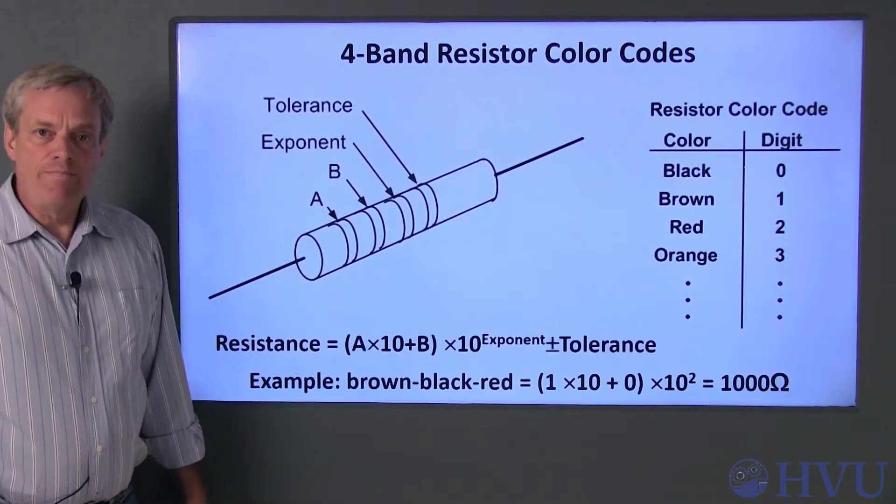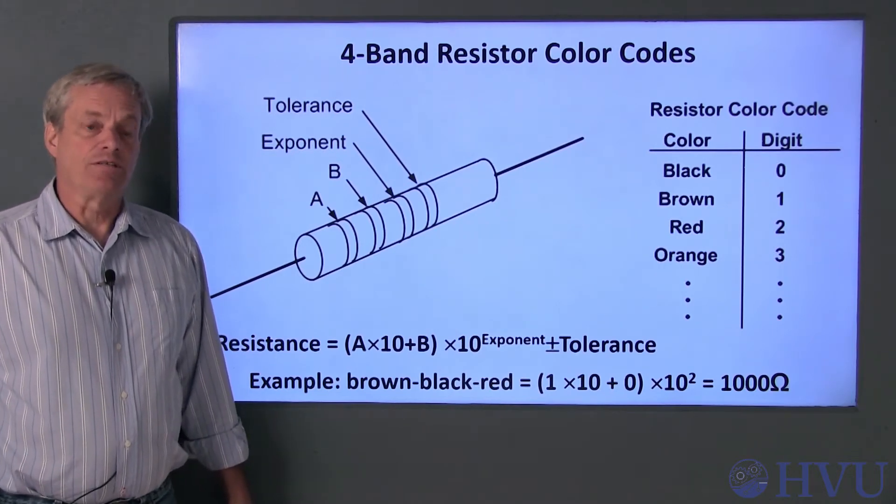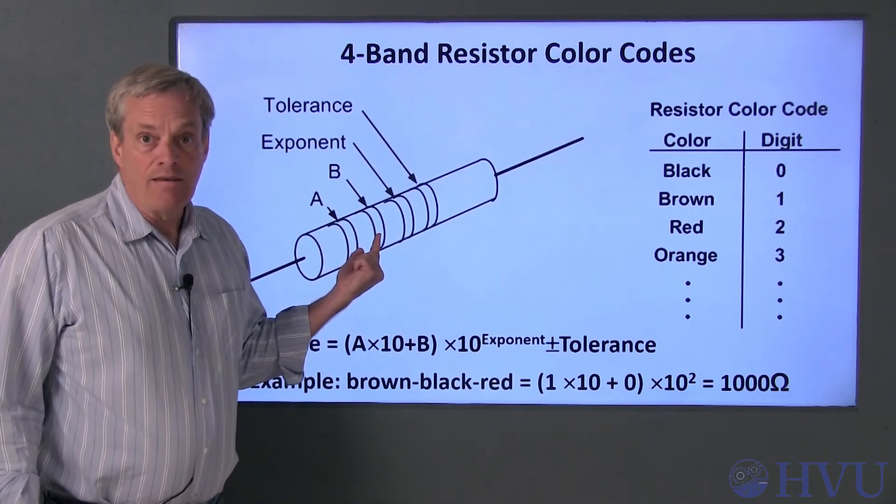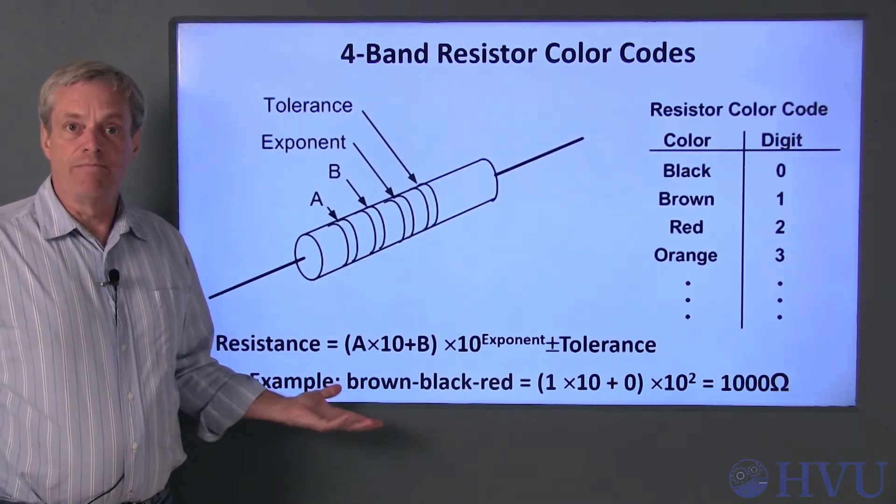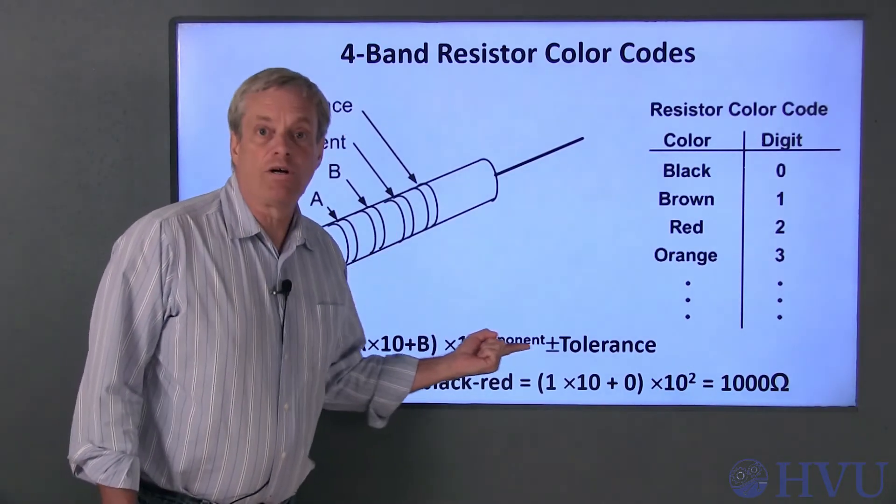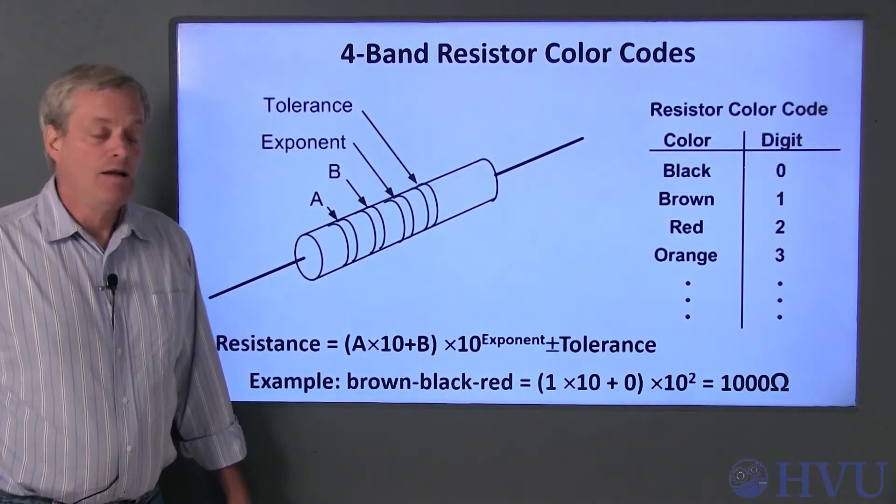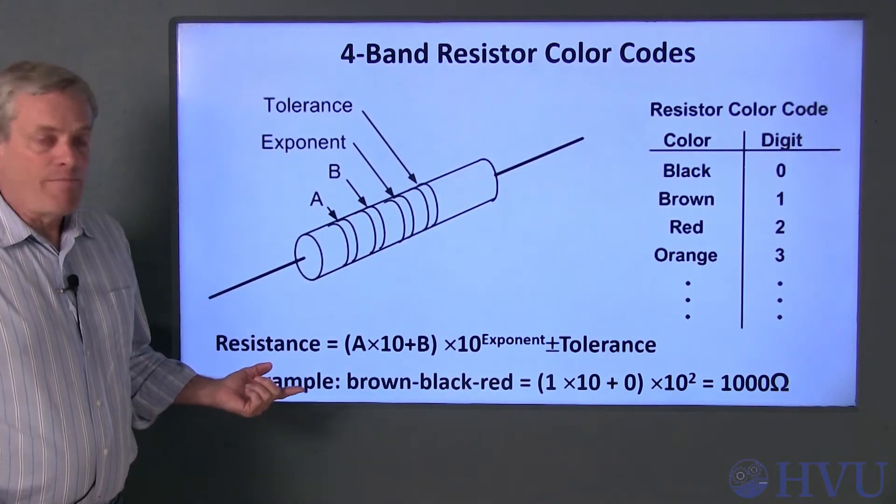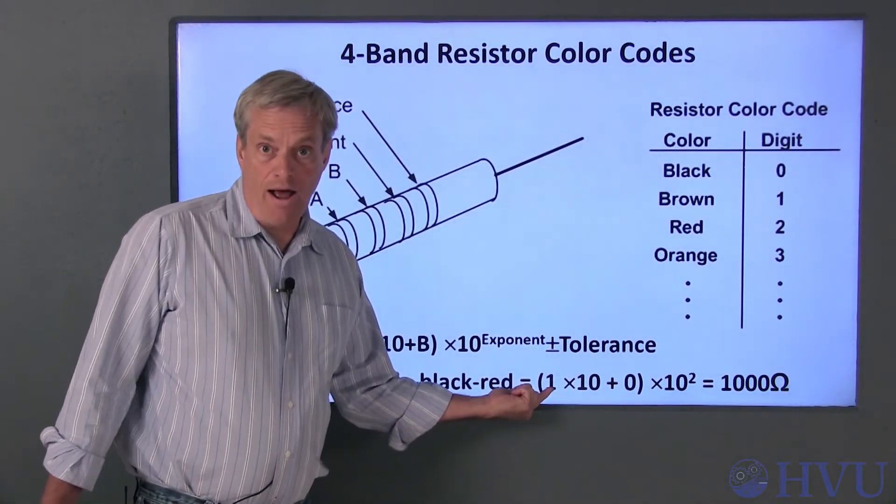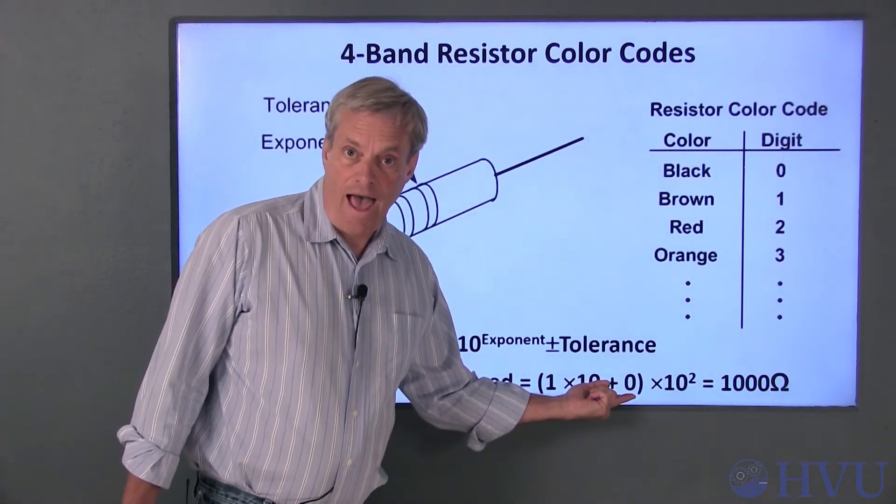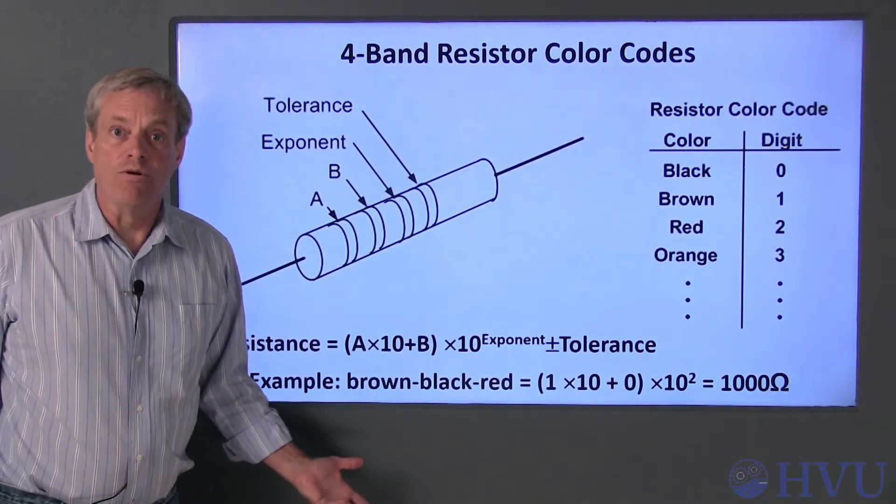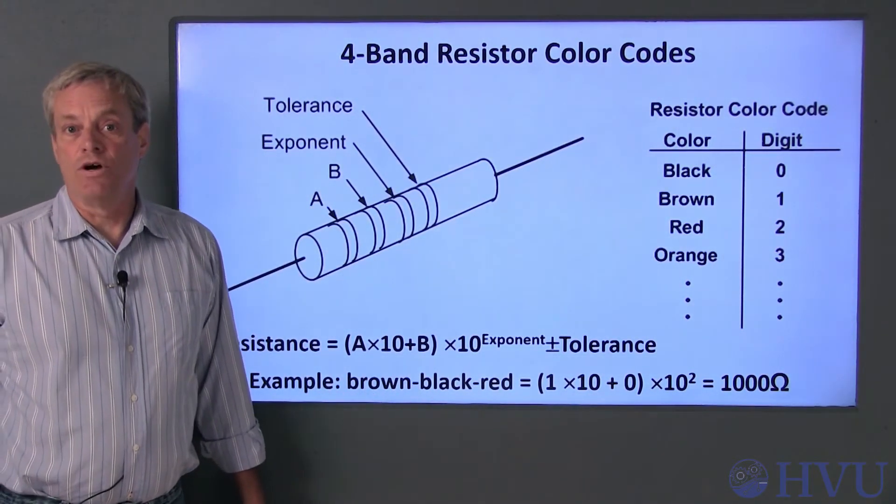The first 3 bands are read as follows to get the nominal resistance. The general formula is shown here. The first 2 bands, A and B, represent a 2-digit number which provides the mantissa of the resistance. The 3rd band provides an exponent, or power of 10 by which the mantissa is multiplied. For example, if the first 3 bands are brown, black, red, the value is 1 for brown, times 10, plus 0 for black, times 10 to the 2nd power, since red corresponds to 2. This is 10 times 10 squared, or 1000 ohms.